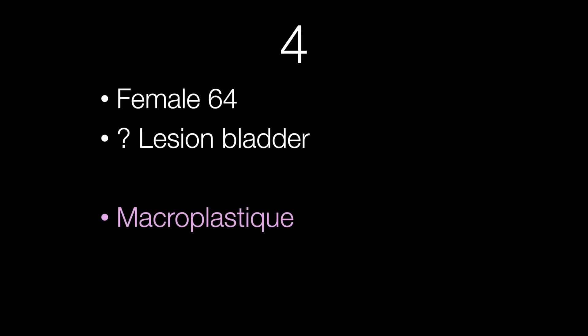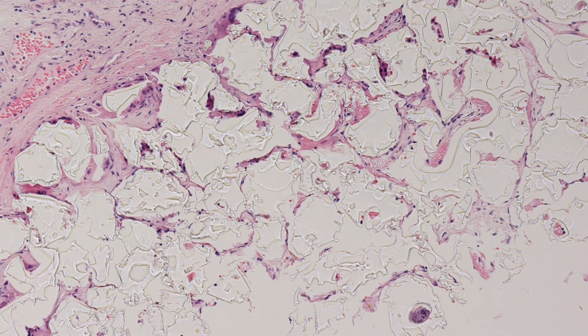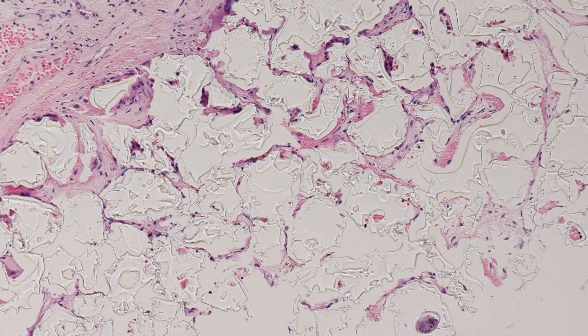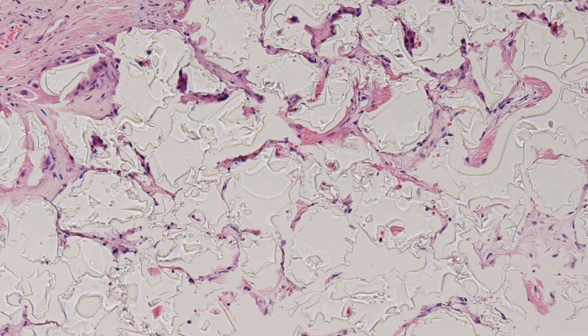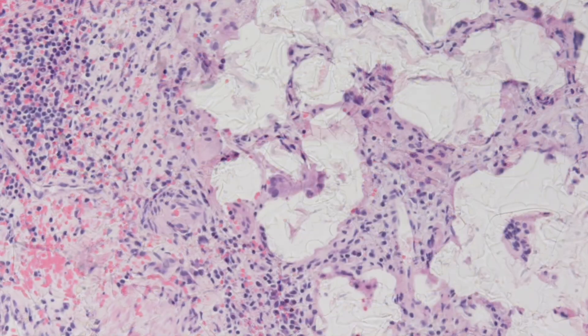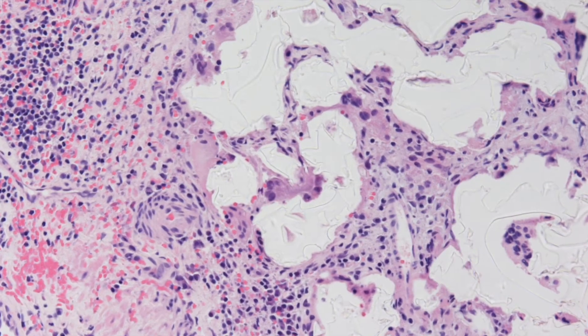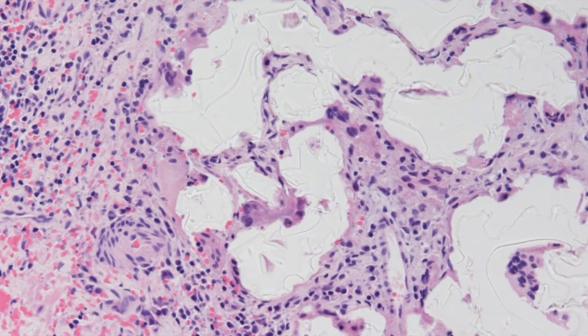This is a good example of macroplastique presenting as a bladder lesion. It has a characteristic histological appearance with these clear fragments surrounded by foreign body giant cells and lying in a rather fibrous stroma that they have caused.